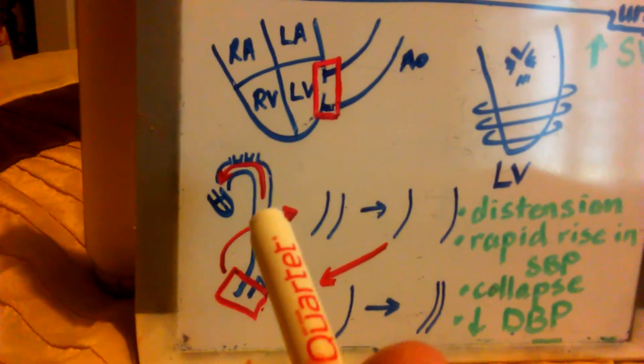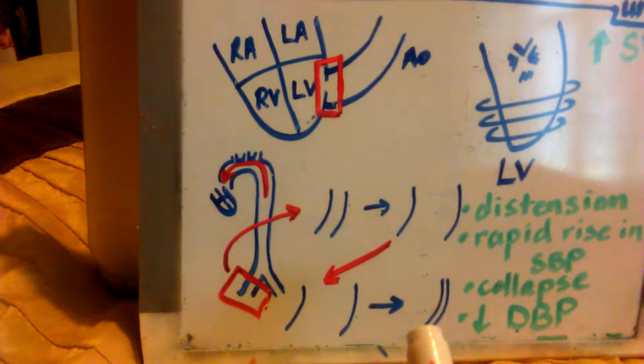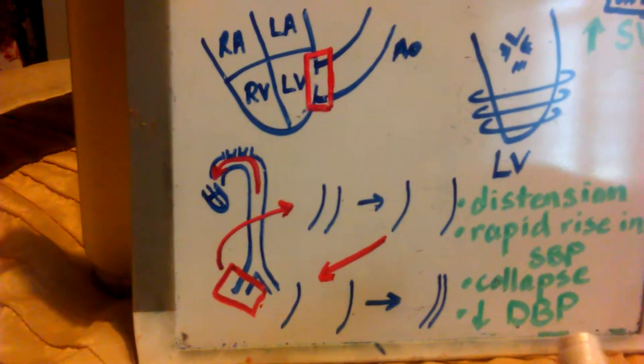And then because of the return to the left ventricle of the blood, you have a rapid collapse of the peripheral arteries and a decrease in diastolic blood pressure.